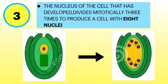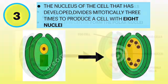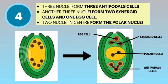Now take a look at the diagram on the right. We see that there are 8 dots in total, which represent the 8 nuclei when the nucleus of the cell has developed. It divides mitotically 3 times to produce a cell which contains 8 nuclei. Then, 3 nuclei form 3 antipodal cells, another 3 nuclei form 2 synergid cells and 1 egg cell, and the remaining 2 nuclei in the center form the polar nuclei.